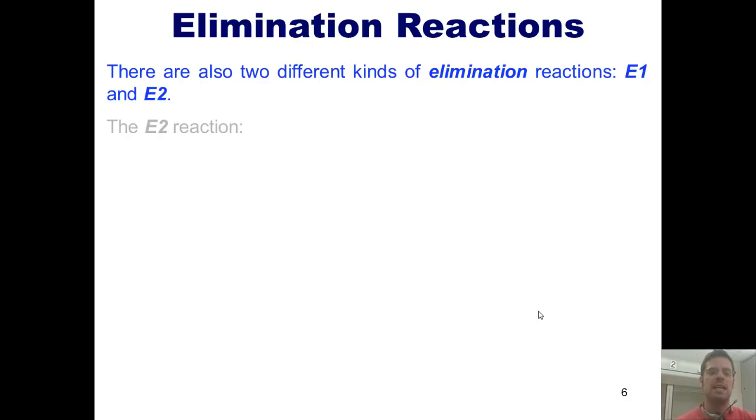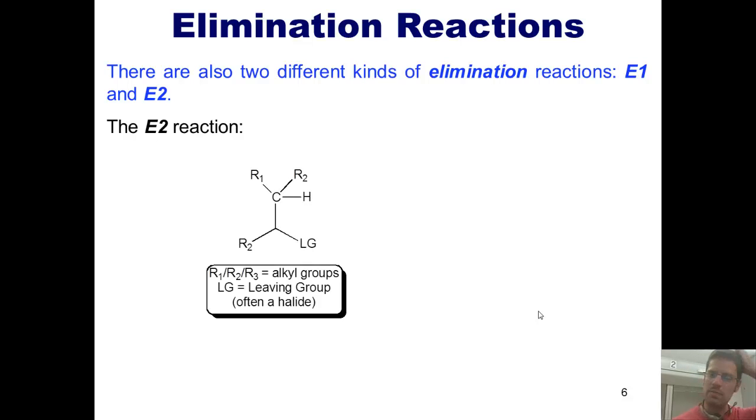Here is the mechanism of the E2 reaction. So just as in an E1 reaction, we have some type of molecule that has a leaving group on it. Once again, some type of group that can generally handle a negative charge, often a halogen like a chlorine, bromine, or iodine. But it could be something else as well.